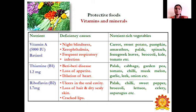Riboflavin, otherwise called vitamin B2, is found in garlic, chilies, sweet pepper, broccoli, legumes, celery, and asparagus. Deficiency of riboflavin leads to ulcers in the oral cavity, loss of hair, dry scaly skin, and cracked lips.